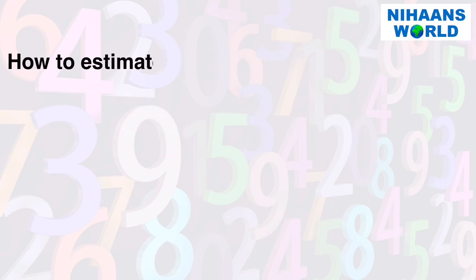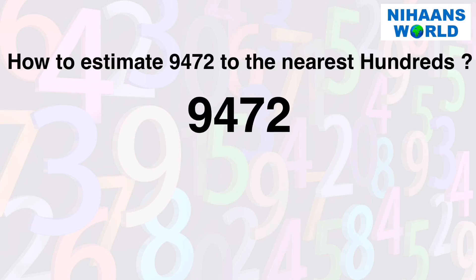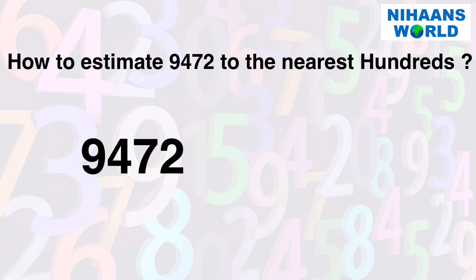How to estimate 9472 to the nearest hundred? The given number is 9472. Its tens digit is 7, which is greater than 5. So we increase the digit at the hundreds place by 1 and replace the digits at the tens and ones place by 0. Hence, 9472 is rounded off to the nearest hundred as 9500.